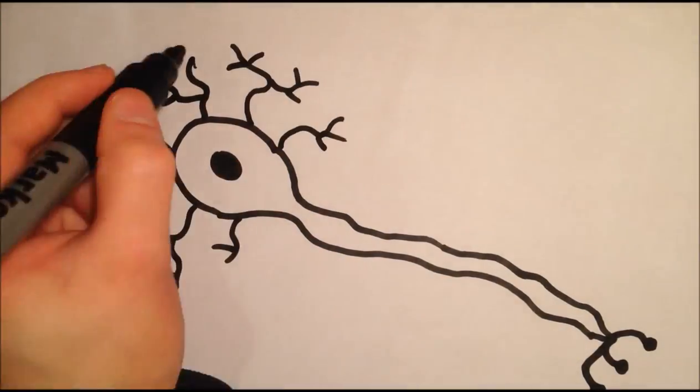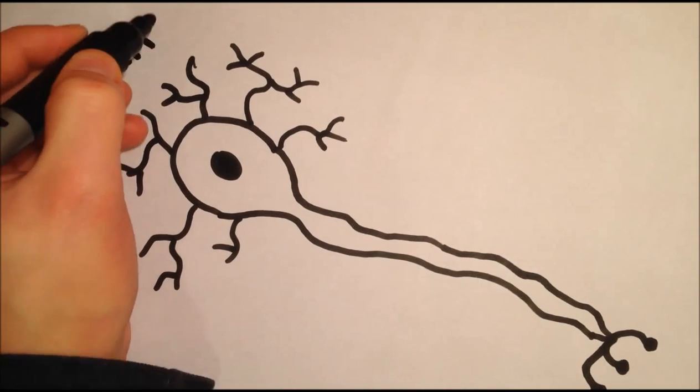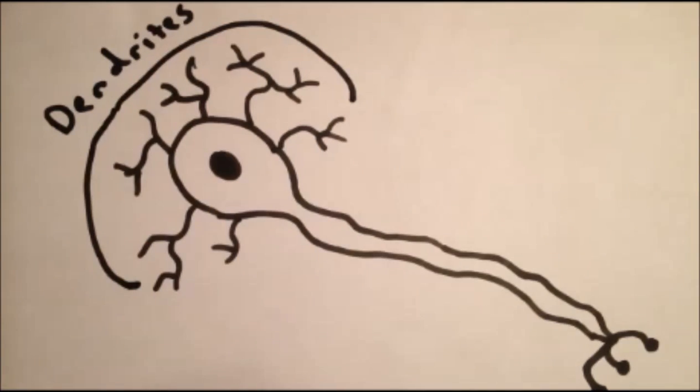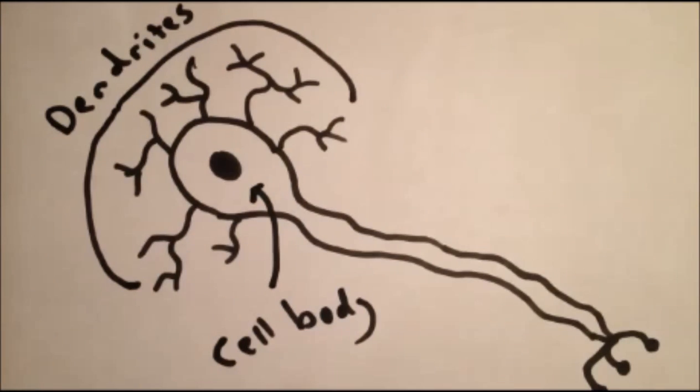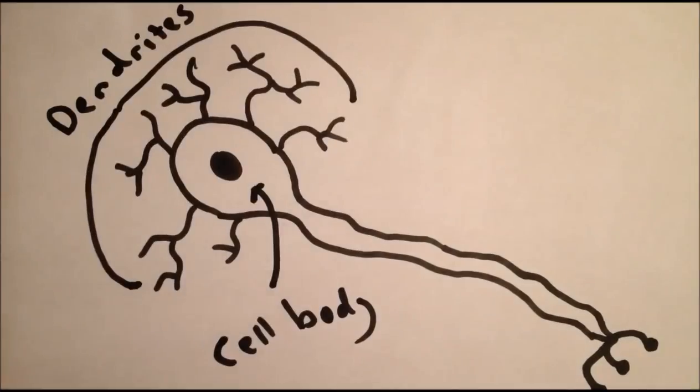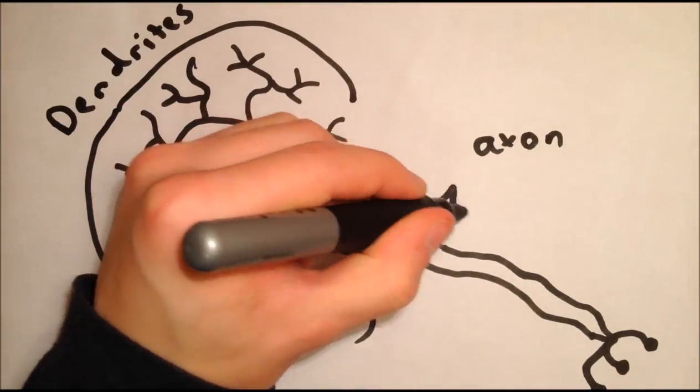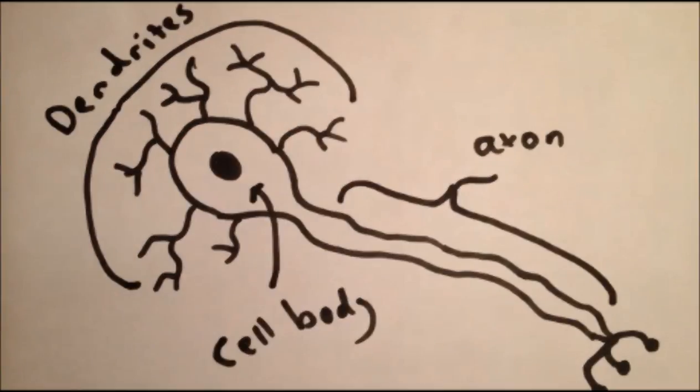Neurons have three important components: Dendrites, which conduct signals from sensory receptors or other neurons to the cell body. The cell body, also known as the soma, where the nucleus and other organelles required to synthesize proteins reside. And axons, which send action potentials away from the cell body to other neurons or to other cells such as muscles or glands.